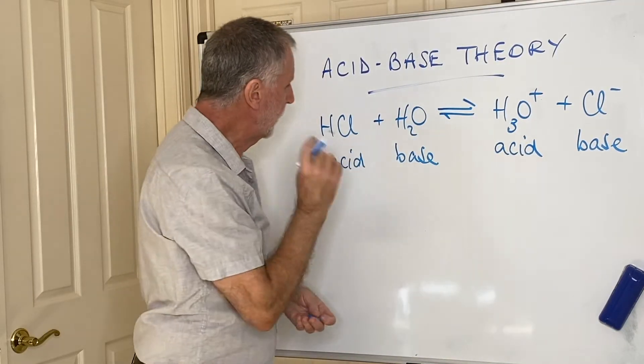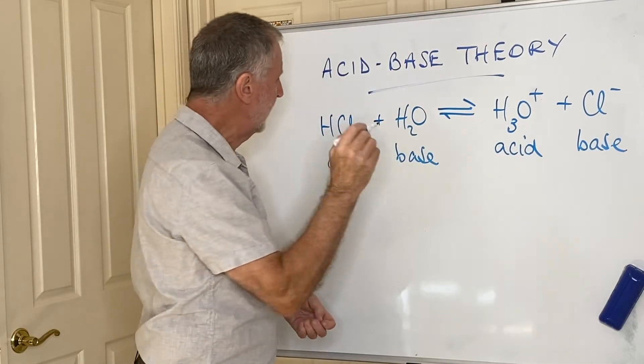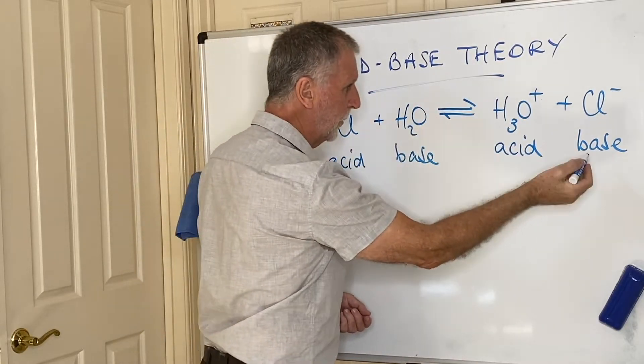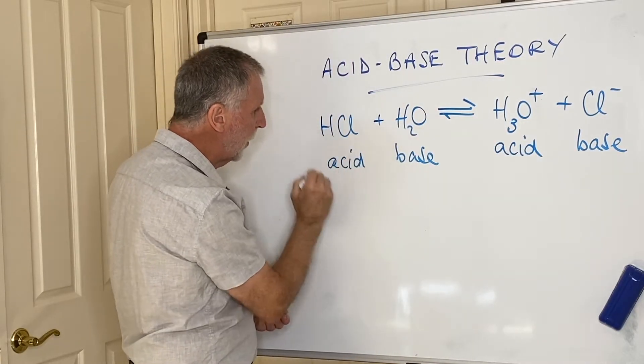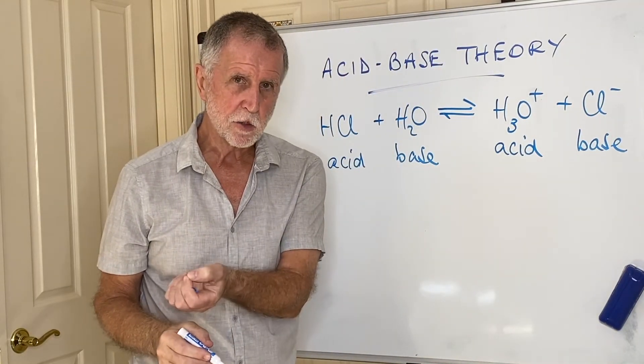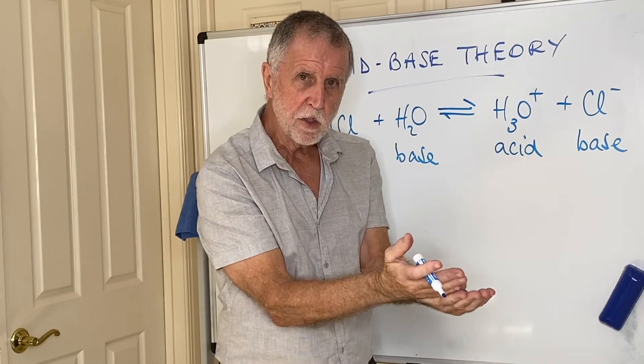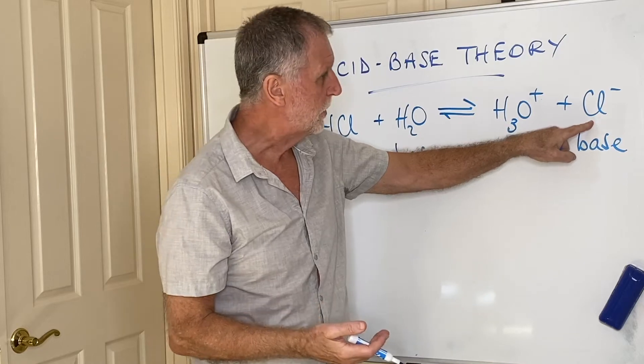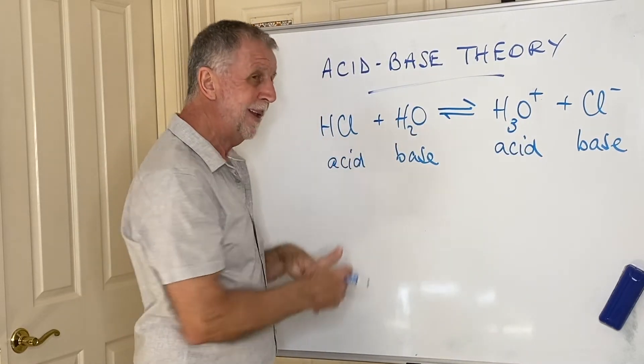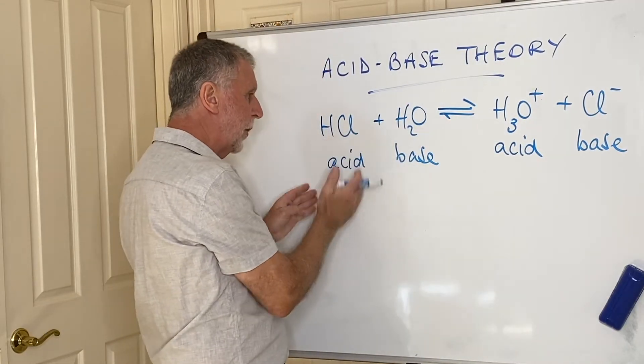One thing you'll notice is this forward reaction dominates here. What does that mean? Well, if this is clearly reacting with this to become those, this is a strong acid, but the base is a weak conjugate base. So strong acids have weak conjugate bases because this doesn't particularly want to accept the proton and go back again. This, on the other hand, desperately wants to get rid of its proton.